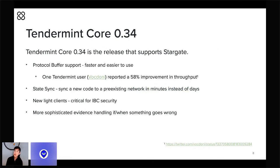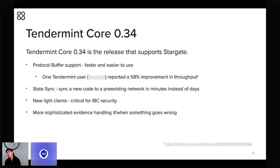Tendermint Core 0.34 also introduces a new light client, which we've rewritten with stronger security guarantees. This is really critical for the safety and security of IBC, since the IBC relayer uses the Tendermint light client to verify that packets have been included on both sides of an IBC transaction. The introduction of a new light client means a bit of a new attack surface for Byzantine behavior, so we've completely revisited the way Tendermint Core handles evidence of misbehavior.